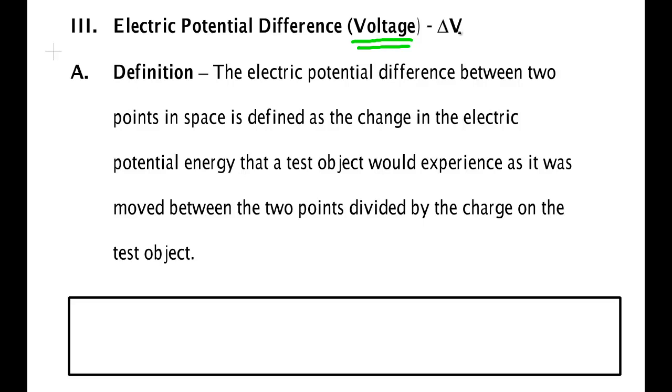Electrical potential difference between two points in space is defined as the change in the electrical potential energy that a test object would experience when it's moved between the two points, divided by the charge on the test object.